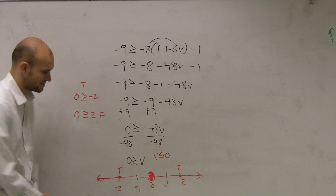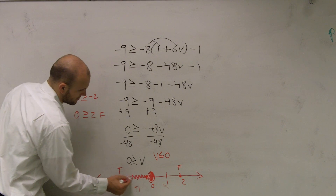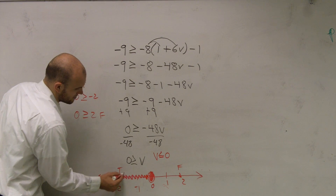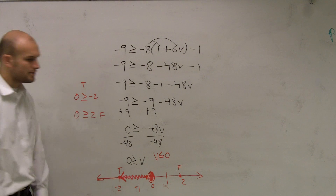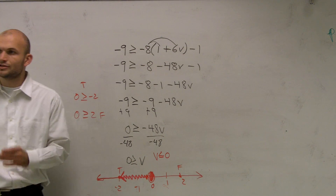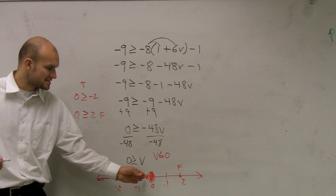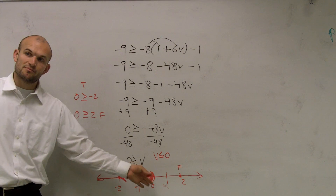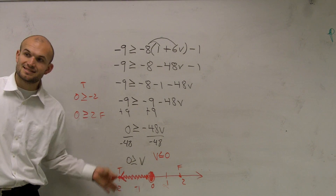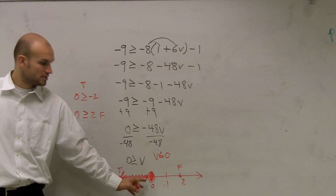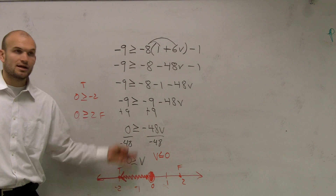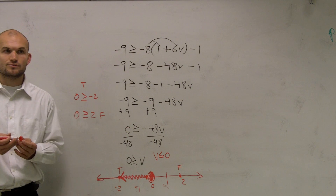True statements. You're going to shade towards the true. That means all numbers less than 0 or equal to 0 make our inequality true.